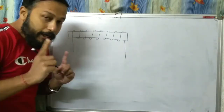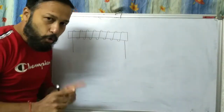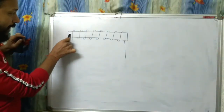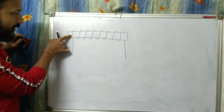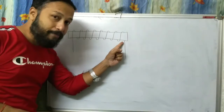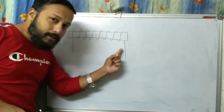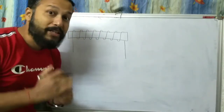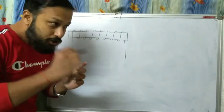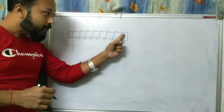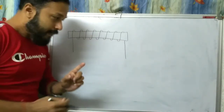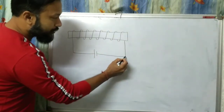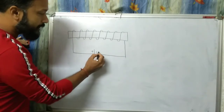Here is something important to note: the first turn is visible, but the last turn is not visible — it is coming from the back. This is very important because this is where students make mistakes. So remember: first turn is visible and the last turn is not visible.